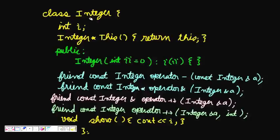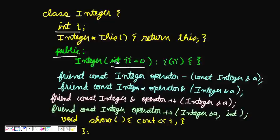So we need what is called overloading of operators. I define a class integer which has a private member. In C++ when you don't write specifiers, it is taken as private. So int i is private, and integer star this is also private, which returns the this pointer to the class. We are declaring public functions — the constructor is public, it takes an integer and by default its value is 0. This is the C++ initializer list syntax.